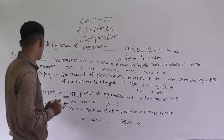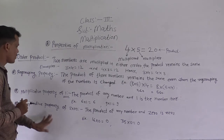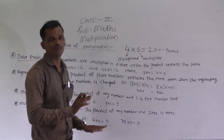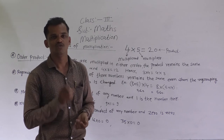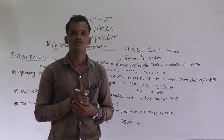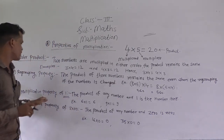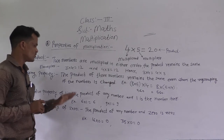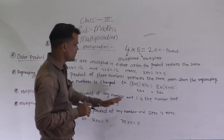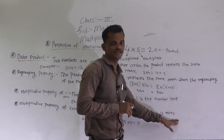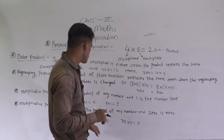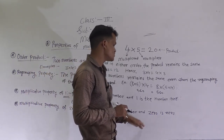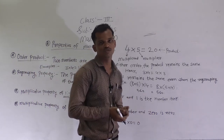The next property is the multiplicative property of 0. The product of any number and 0 is 0. Here, 16 into 0 is equal to 0, and 35 into 0 is equal to 0.